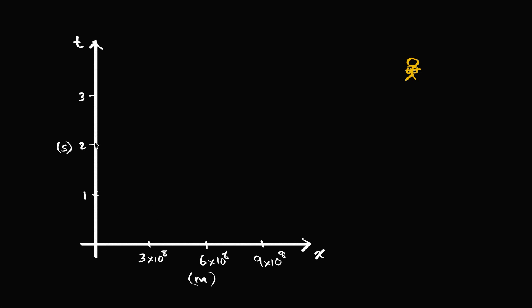You might notice these numbers: one second, two seconds, three seconds on the vertical axis, and in meters that's three times ten to the eighth, six times ten to the eighth, nine times ten to the eighth. So these are massive, massive numbers, and you could guess where they are coming from — they're coming from the notion that the speed of light is approximately three times ten to the eighth meters per second. But we'll get to that in a second.